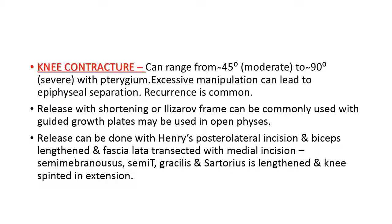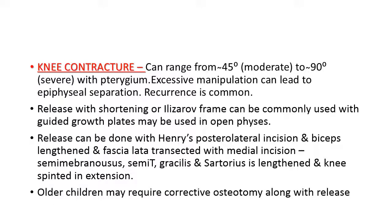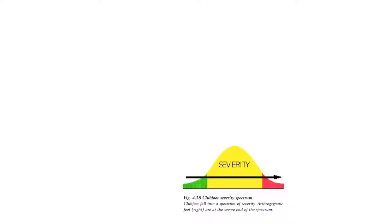The release is done via Henry's posterolateral incision — transecting the fascia lata and lengthening the biceps. A medial incision releases semimembranosus, semitendinosus, gracilis and sartorius. The knee is then splinted in extension. Older children may require osteotomy.